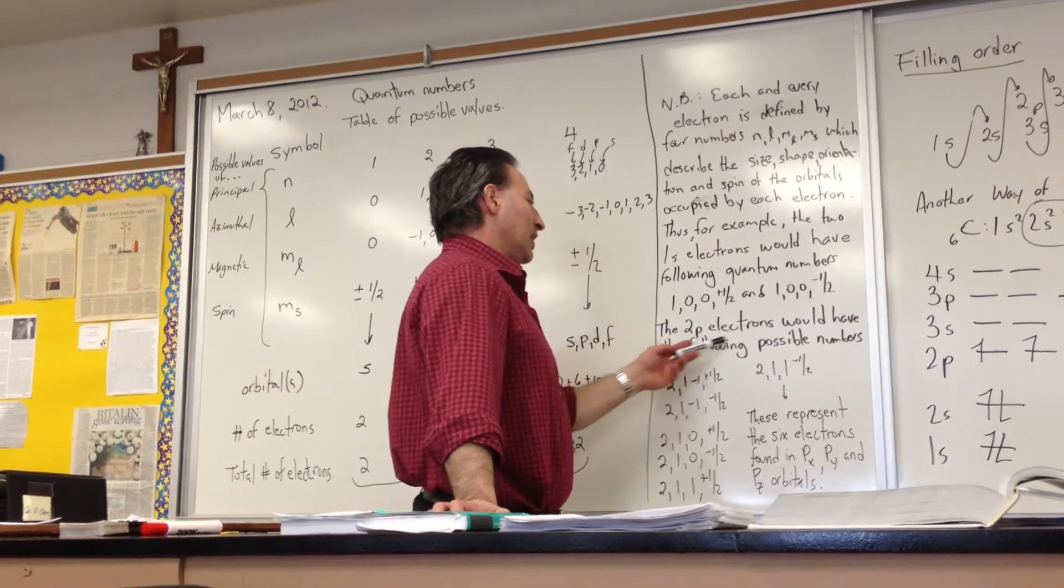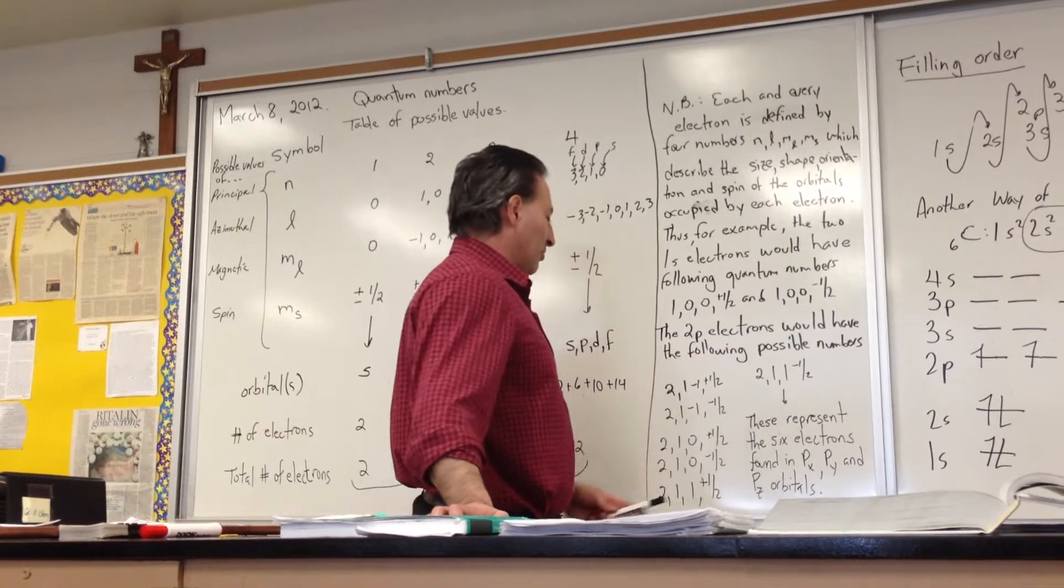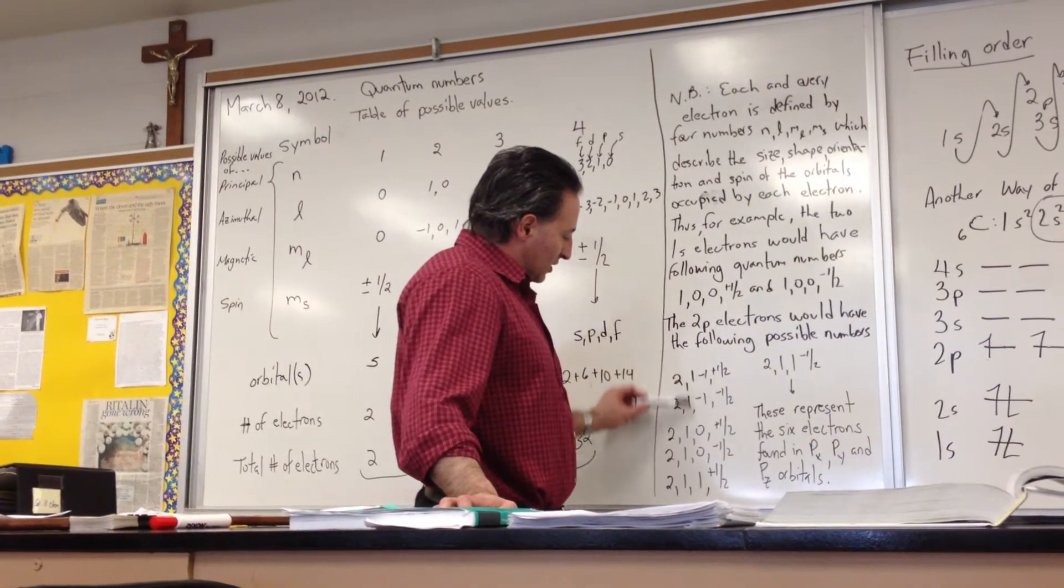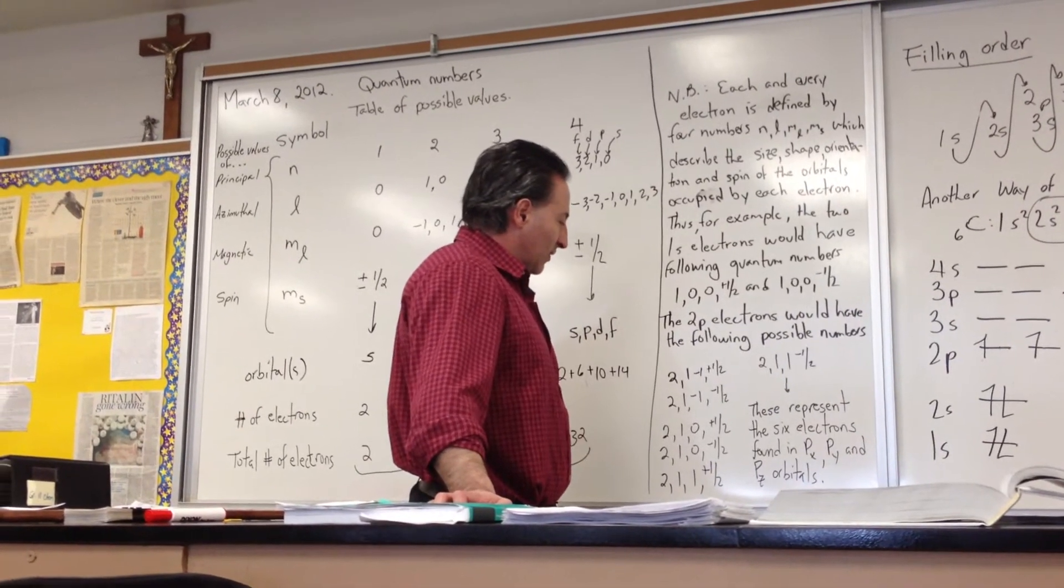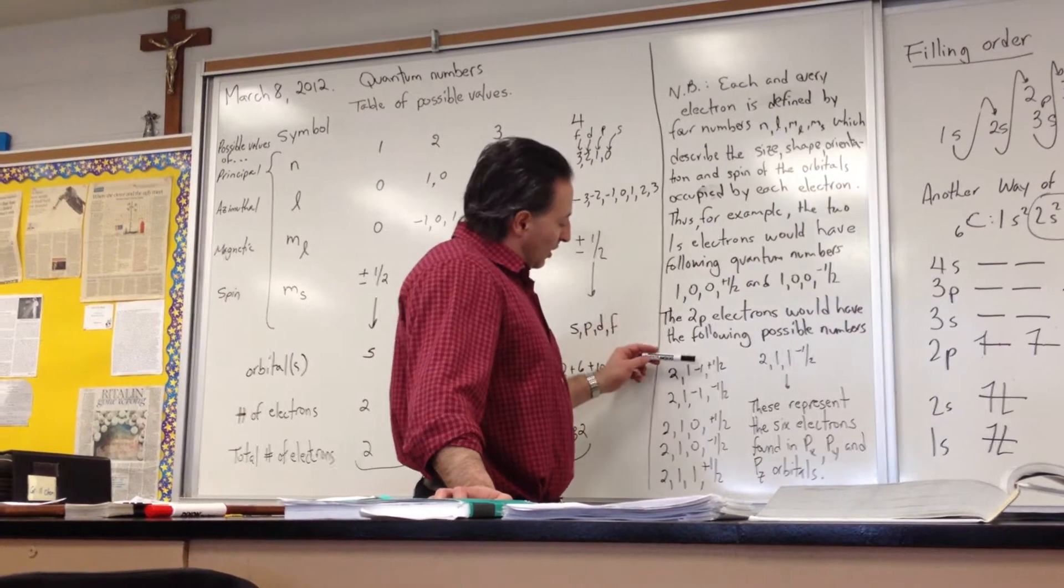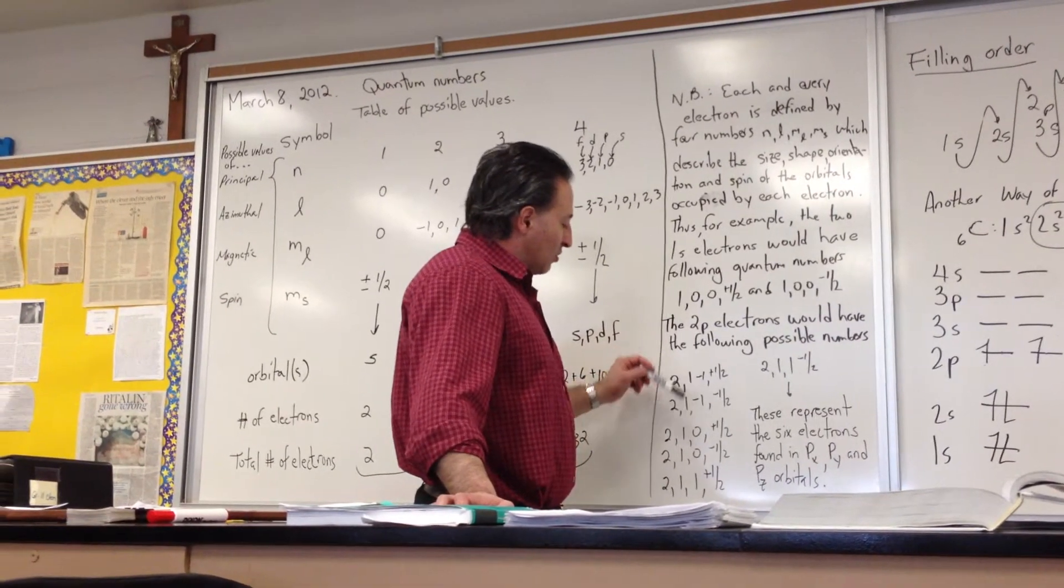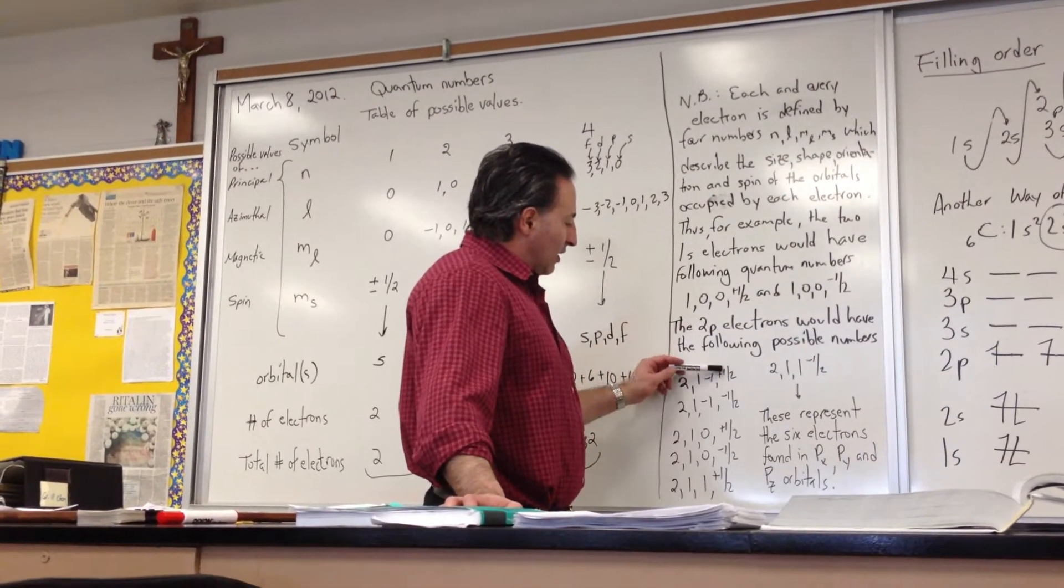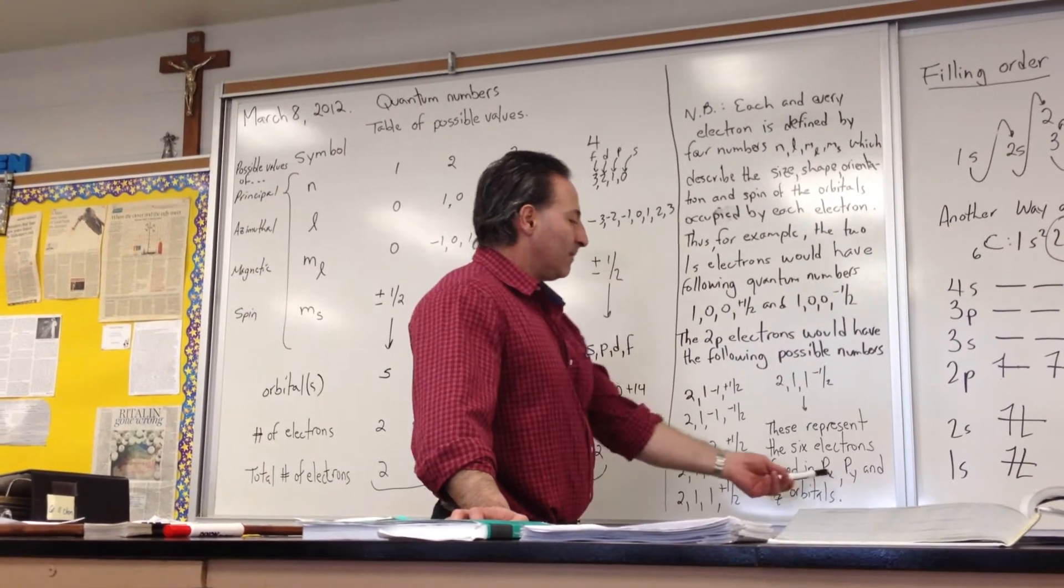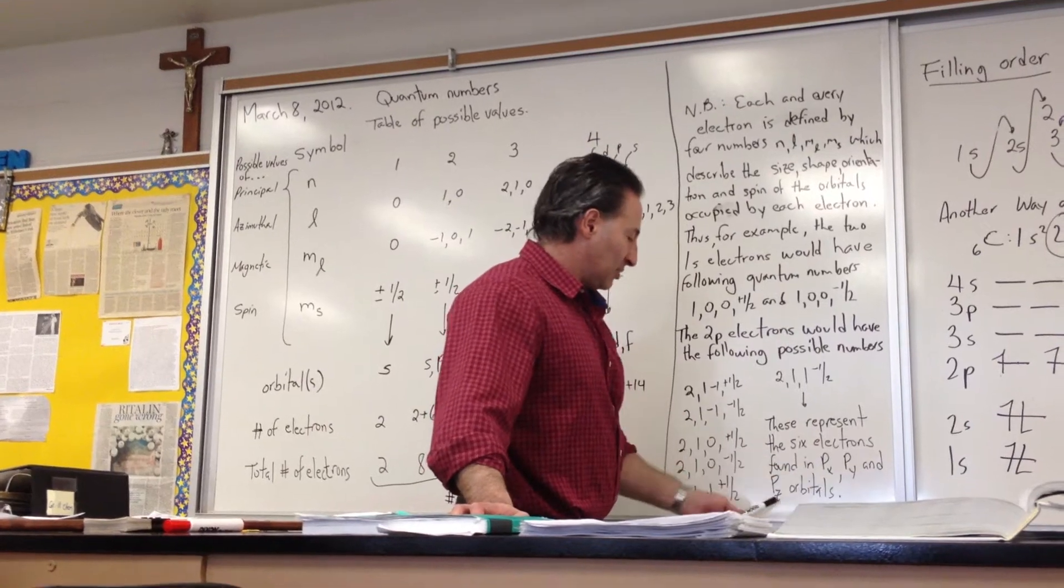The two p electrons would have the following possible numbers. Notice how l is always one, because that's the p orbitals. You have to have the value of l equals one. The principal quantum number is two, and then when l is one, you can have minus one, zero, or plus one, and then we've worked out every permutation. So there are six permutations under those conditions, and it gives rise to the px, py, and pz.